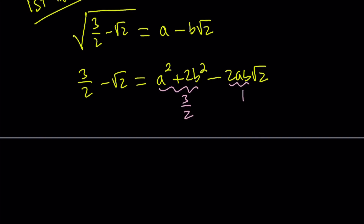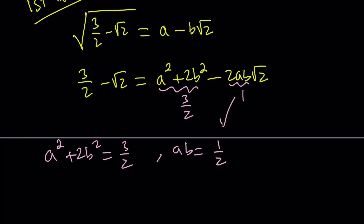Since they both have the minus sign, I can just set it equal to positive 1. From here we get a system of equations: a squared plus 2b squared equals 3 halves, and ab equals 1 half. Now we can go ahead and square both sides of the second equation — a squared times b squared gives us 1 fourth. This is a system in two variables, and we can turn it into a quadratic equation.